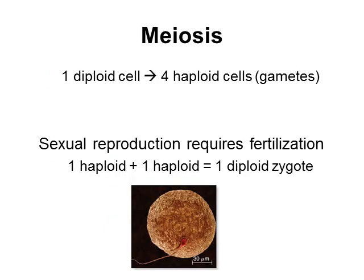Meiosis is another type of cell division. In this type of cell division we're going to take one diploid cell — one cell that has two copies of every chromosome — and out of that one diploid cell we're going to create four haploid cells. You really have to understand the difference between diploid and haploid, which was covered in a previous section. The four haploid cells are going to be our gametes, and they're going to have half the number of chromosomes — just one copy of every chromosome instead of two.